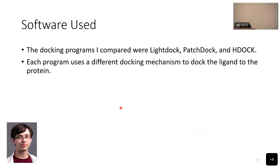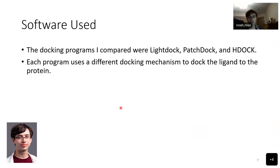The method PatchDock uses is based on the shape of the protein and the ligand. It finds patches on the protein and ligand that are convex or concave, then matches them together like a puzzle. Since this method doesn't try every possible position and only looks at likely spots where they'll fit together, it's very fast in comparison to LightDock. However, it doesn't allow the larger protein to move at all, which occurs during actual docking, so its predictions may be a bit off.